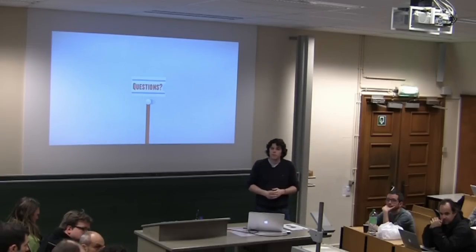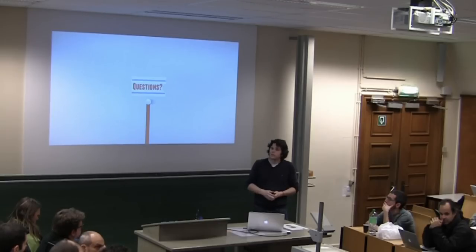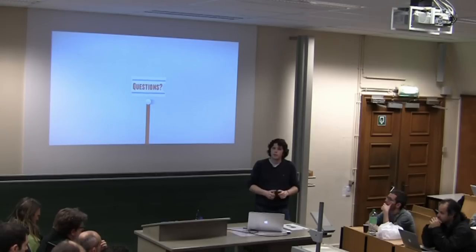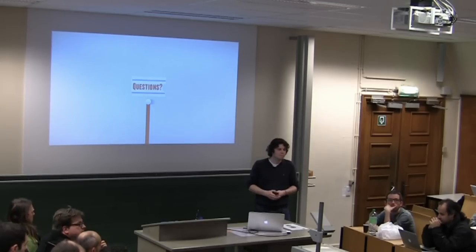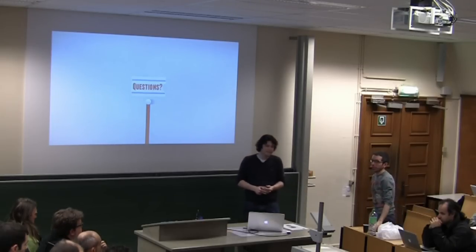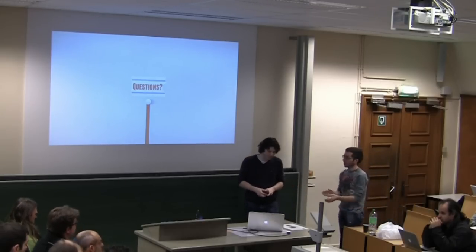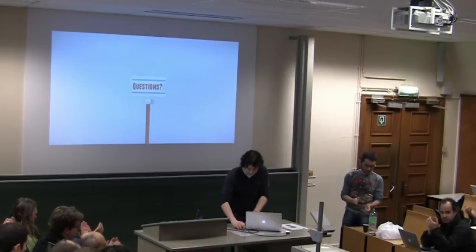A well-known class of temporal graph databases are source control systems. Have you looked at the algorithm behind, for example, Git or Mercurial as the basis of your approach? No, not really. No more questions? Okay, thank you very much.